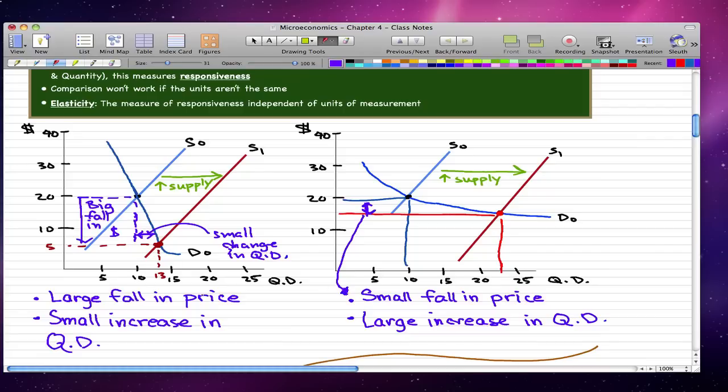In this case, there is a small change in price, so I'll just connect it here. There's a small fall in price, and we can see that there's a large increase in quantity demanded. The original quantity demanded was 10, but due to the small fall in price, there's a big increase in quantity demanded.